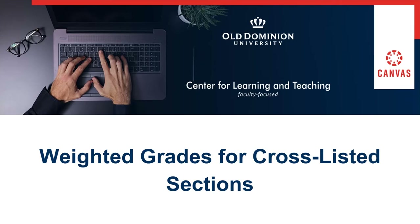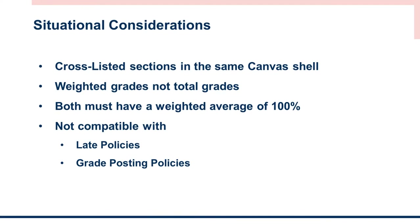Welcome to CLT's video for how to manage two cross-listed courses that use different weighted grades in the Canvas gradebook. It's important to note that this is intended to be used when you have two different sections cross-listed in the same Canvas shell, such as a 495 and 595 undergraduate and graduate mix section.